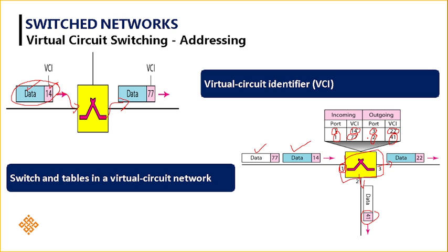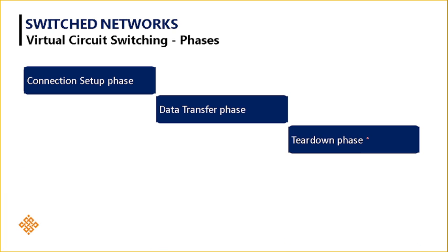This is how the routing table is updated in a switch in the case of virtual circuit switching. In virtual circuit switching there are three phases: the connection setup phase, the data transfer phase, and the teardown phase. The connection setup phase must occur before transmitting data. Once the connection is established, data can be transferred. Once data transmission is completed, the connection needs to be closed.